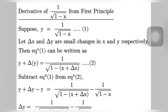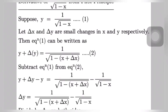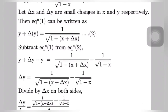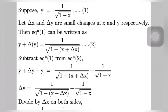Let del x and del y be small changes in x and y respectively, where del y occurs due to the value of del x. Then equation 1 in the form of del x and del y can be written as y plus del y is equal to 1 divided by root under 1 minus x plus del x. Let this be equation 2.